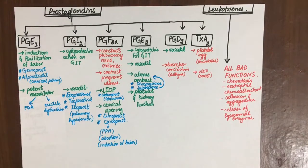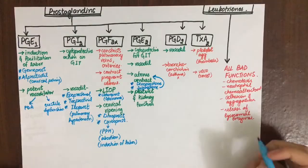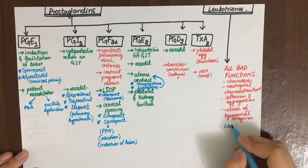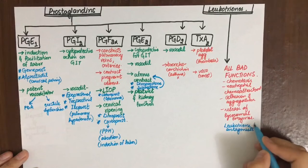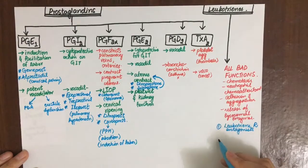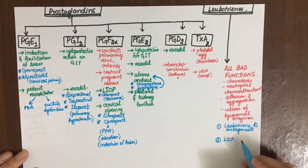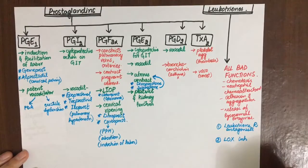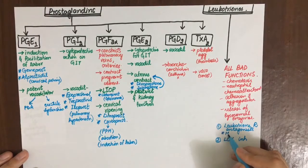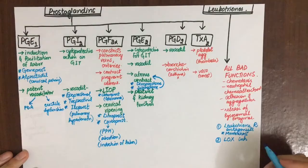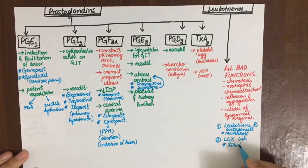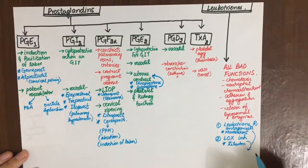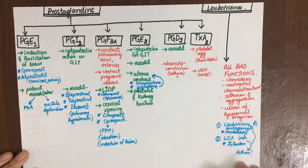Now let's see how leukotrienes can be of use. As all of these are bad functions, we need to antagonize them with leukotriene receptor antagonists and lipoxygenase inhibitors. Leukotriene receptor antagonist montelukast and lipoxygenase inhibitors such as zileuton are used in asthma so that all these bad functions and hypersensitivity reactions do not occur.